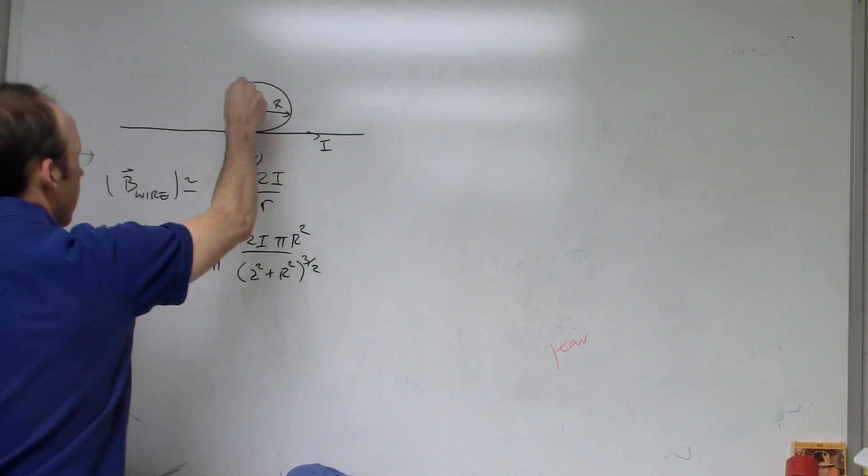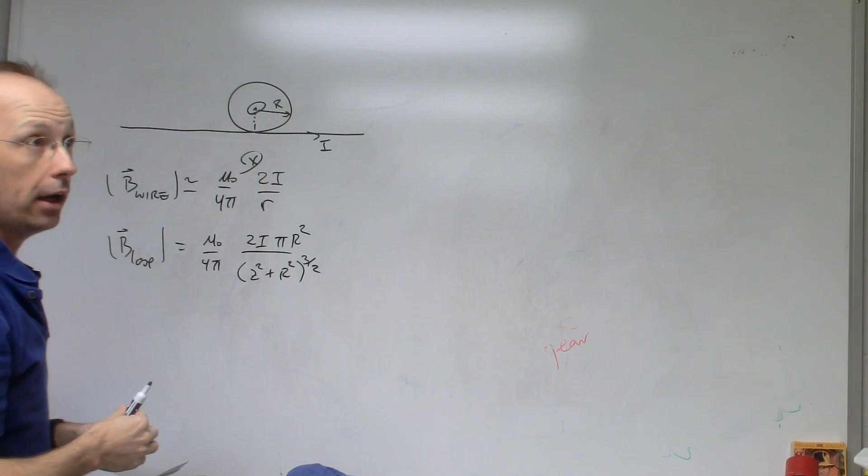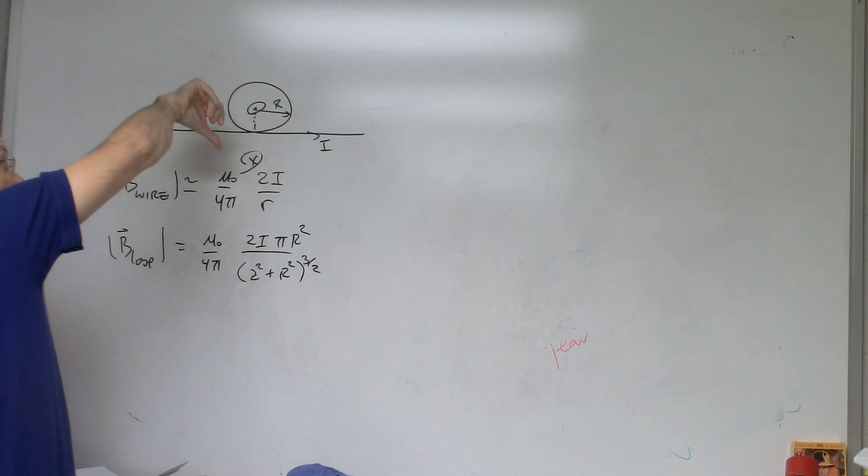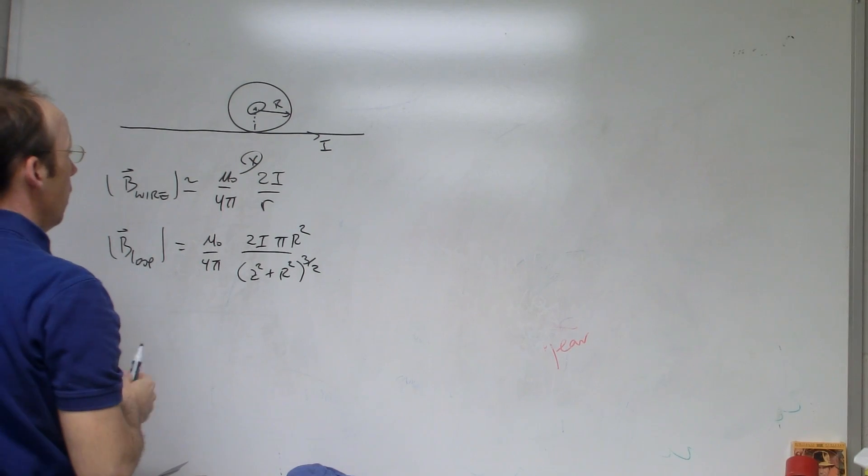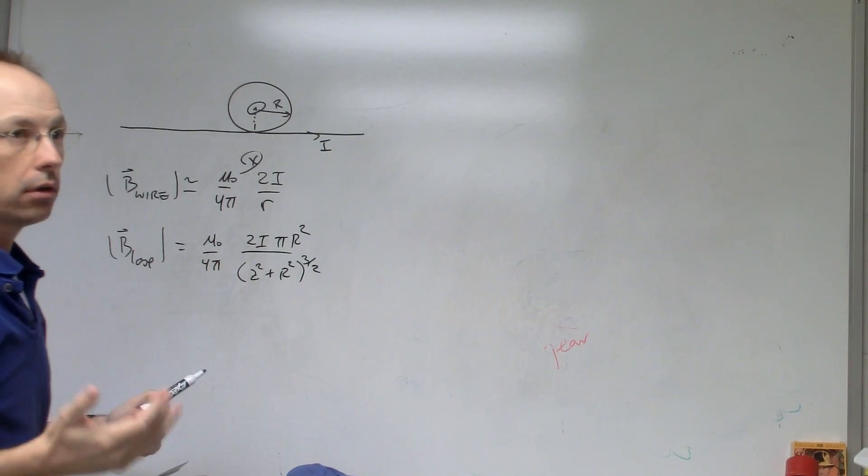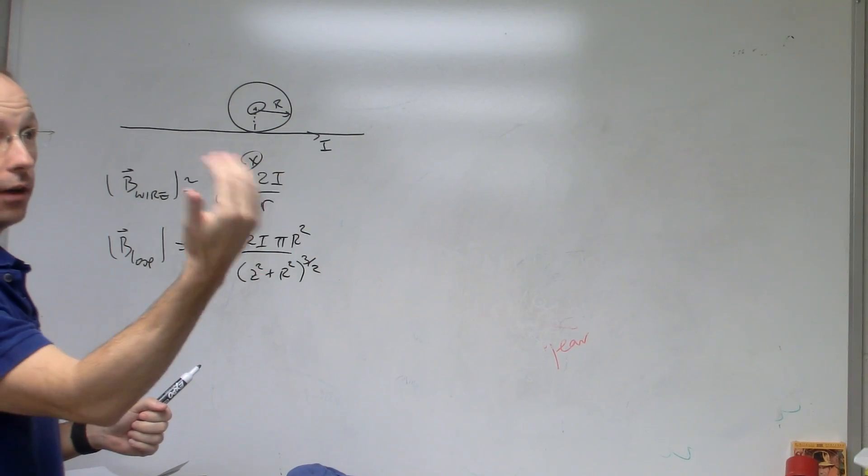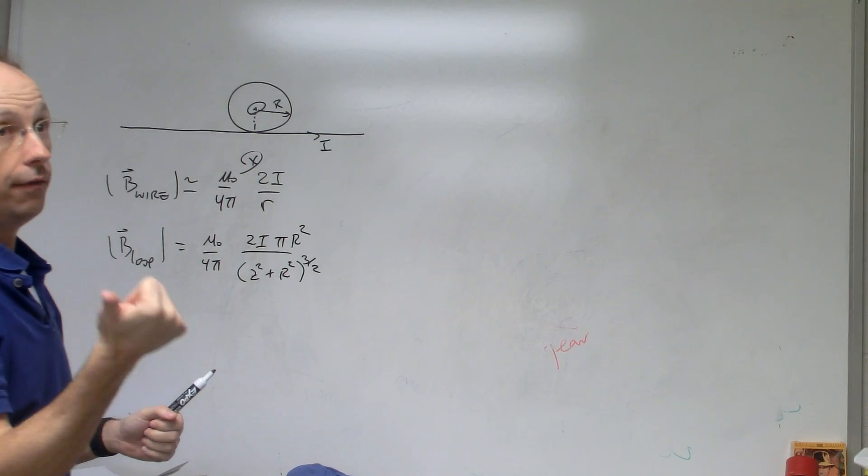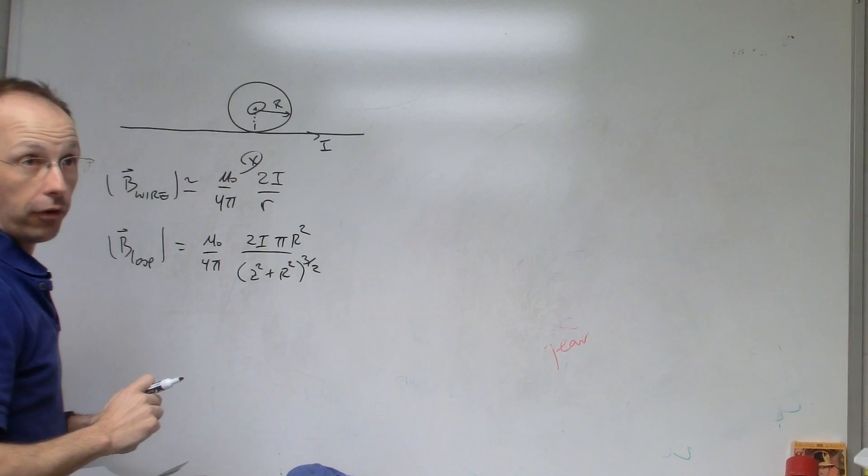Now this goes around like that. You could do this a couple of different ways. You could say here's my current going around, it also makes a magnetic field going out that way. Or there's another rule that says if you put your fingers for a loop in the direction of the current for your right hand, your thumb points in the direction of the magnetic field. So both of those magnetic fields are in the same direction.